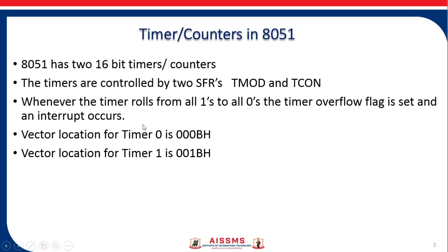In 8051 there are two 16-bit timers or counters. These timers are up timers, meaning the counting is done in the upward direction. So if the initial count is 0001 and you start the counter or timer, the next count will be 0002.